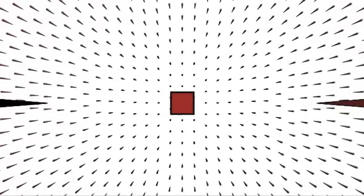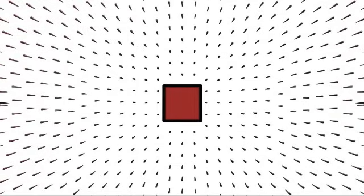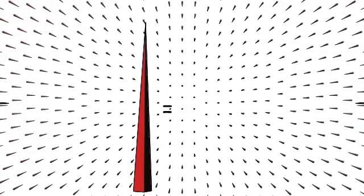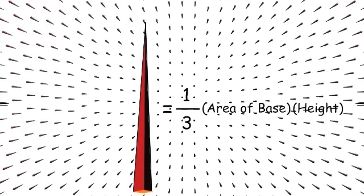So let's take a look at one pyramid and remember that its volume is equal to 1 over 3 area of the base times height.